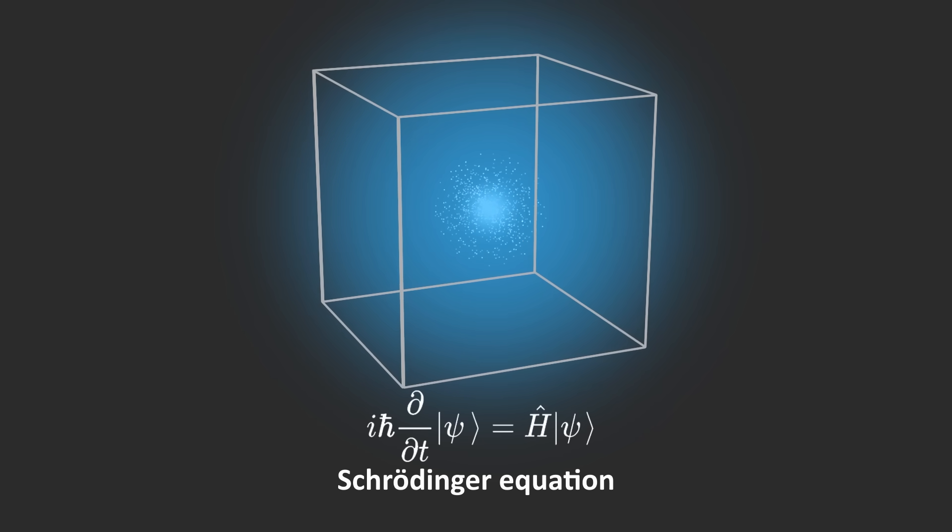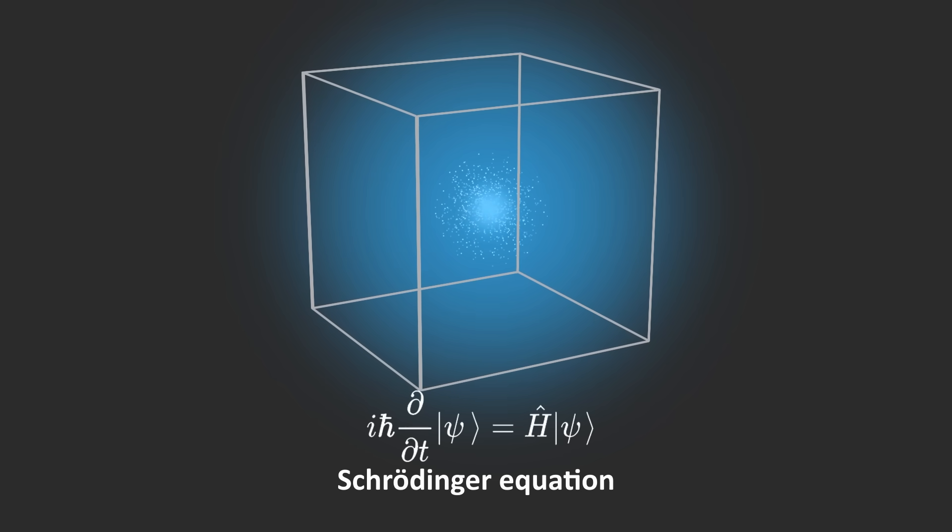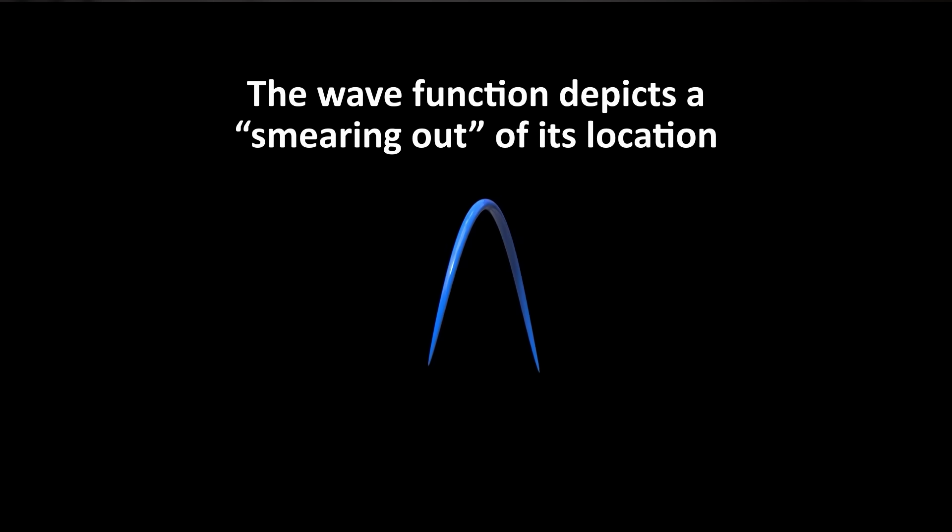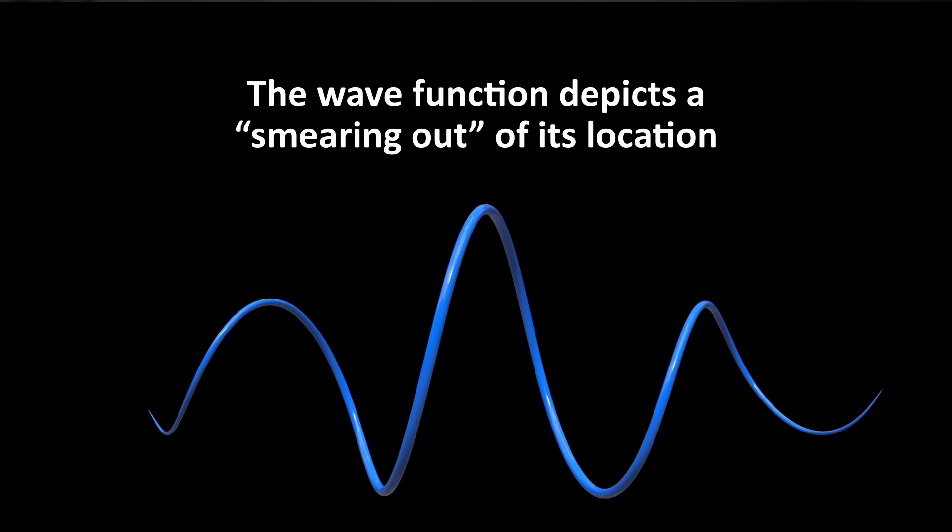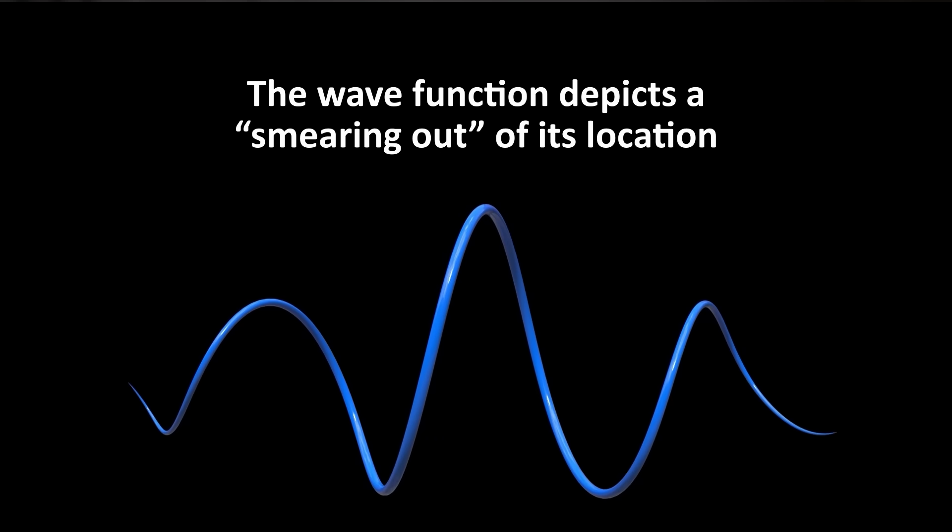Here, the location of a particle is unknown until the moment of measurement. We cannot know where it is beforehand. We can only know the probability of finding it at any specific location. Prior to measurement, the wave function depicts a kind of smearing out of its location.